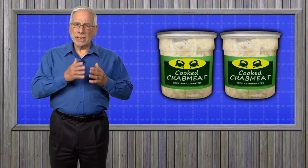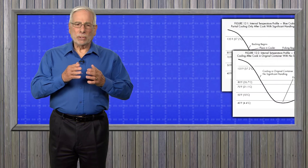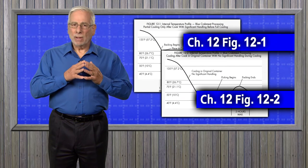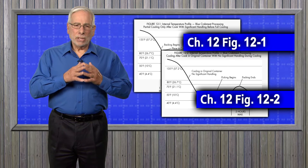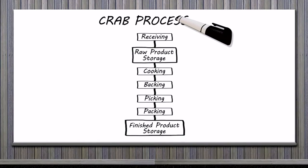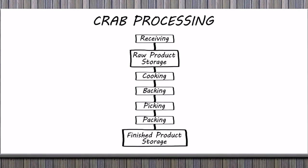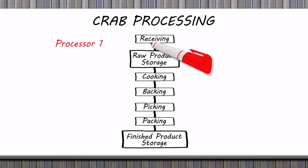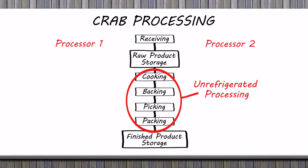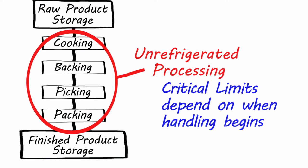Our next two examples are for cooked ready-to-eat crab meat, where significant handling occurs at different temperatures after cooking. You can reference figures 12-1 and 12-2 found in Chapter 12 of the Hazards Guide, which are similar to the examples we're about to discuss. Here's a flow diagram for crabs that are cooked, backed, picked, and packed. While both processors have the same flow diagram and the same unrefrigerated processing critical control point, their processing critical limits will be different based on when handling begins.